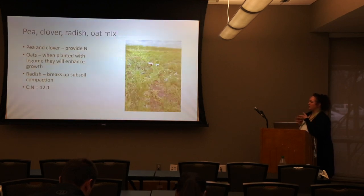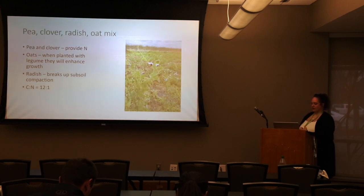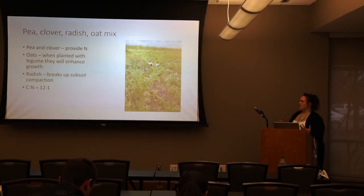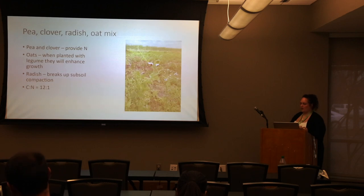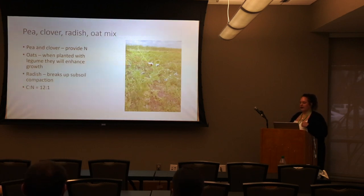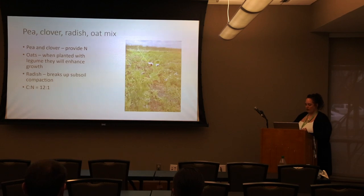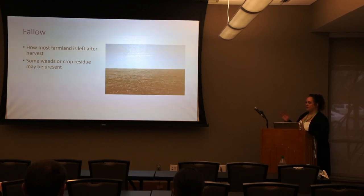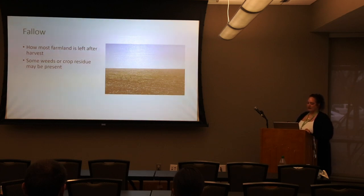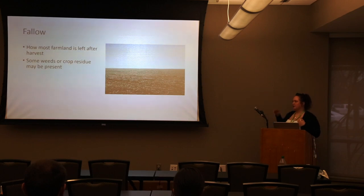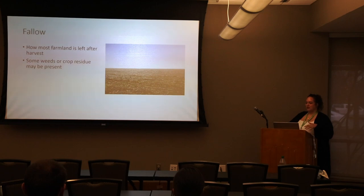We also had a mix of pea, clover, radish, and oat. The pea and clover are legumes that provide nitrogen to the soil; the oats help enhance legume growth; and the radishes with deep tap roots can break up subsoil compaction. This mix has the lowest carbon-to-nitrogen ratio at 12:1, so it's adding nitrogen into the soil. Our last treatment group was fallow plots — how most farmland is left after harvest — with weeds or crop residue present depending on management.